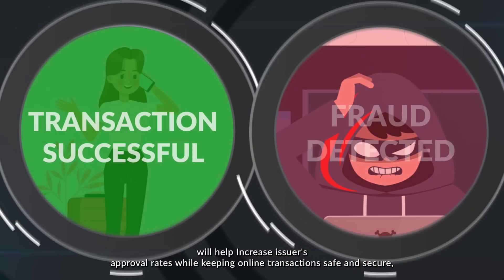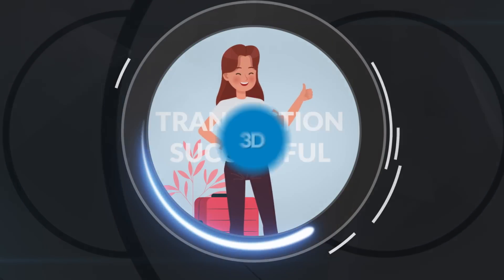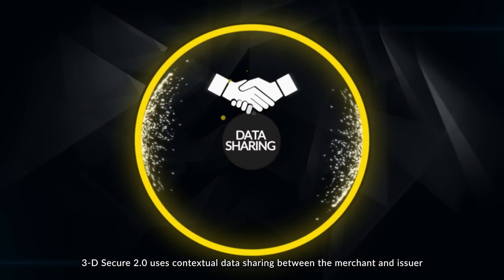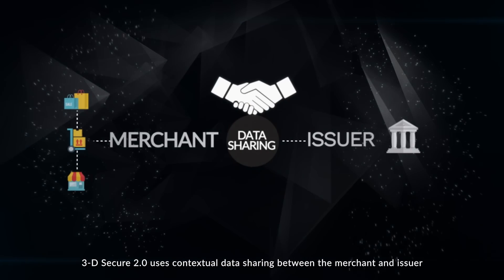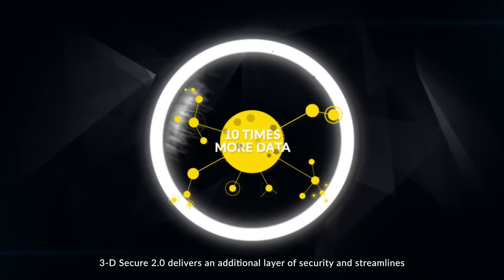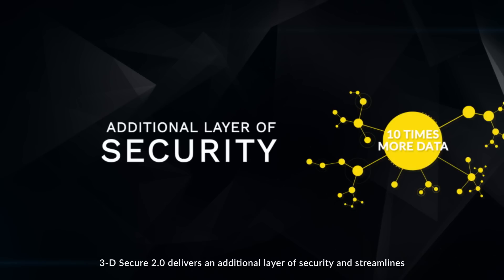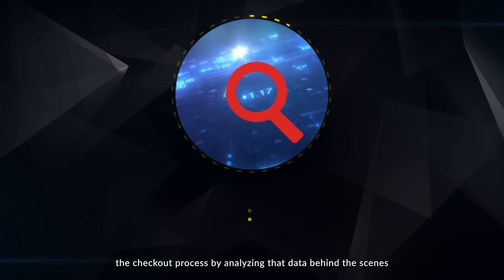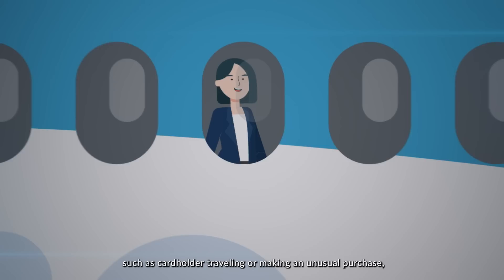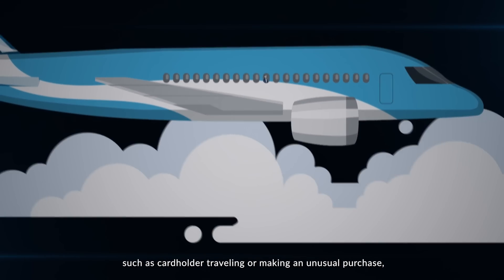Keeping online transactions safe and secure and customer experience positive, 3D Secure 2.0 uses contextual data sharing between the merchant and issuer. Using 10 times more data, 3D Secure 2.0 delivers an additional layer of security and streamlines the checkout process by analyzing the data behind the scenes.